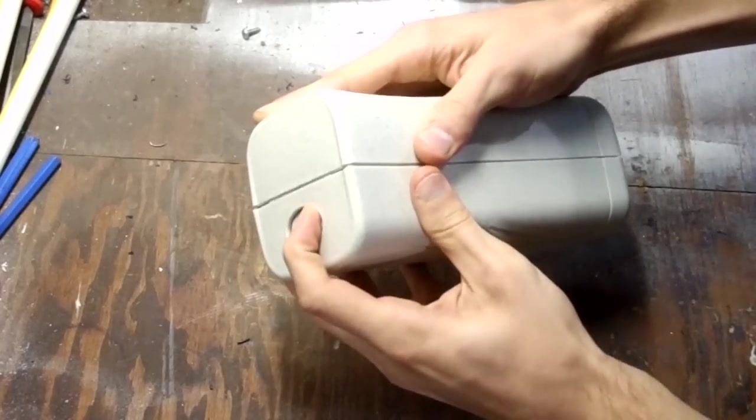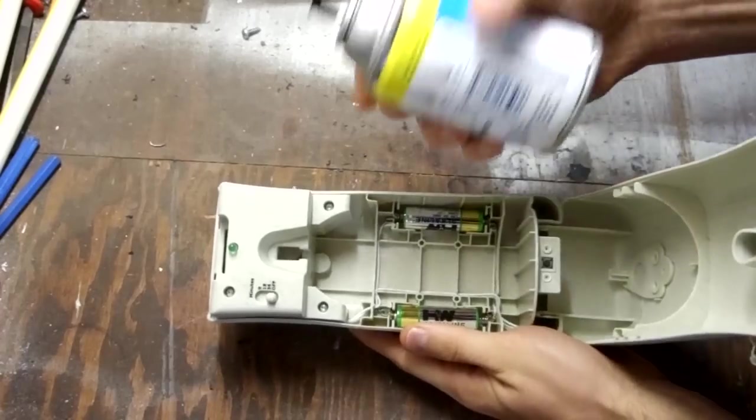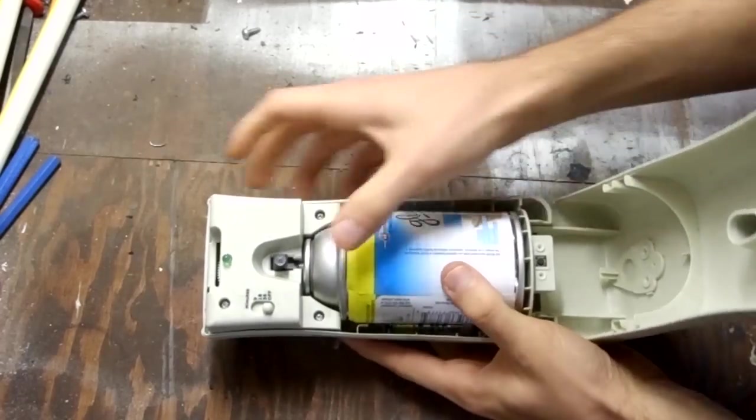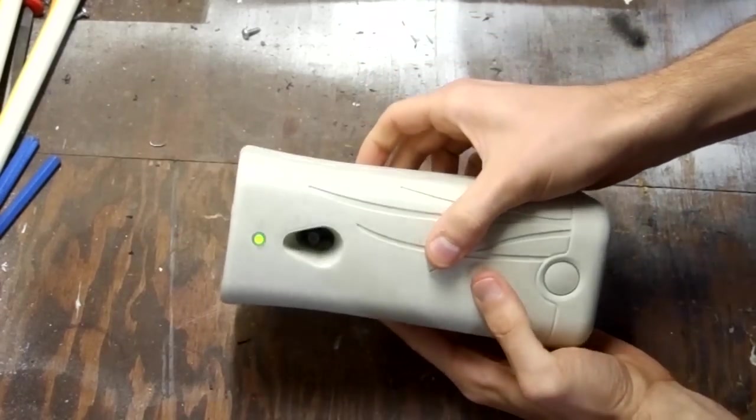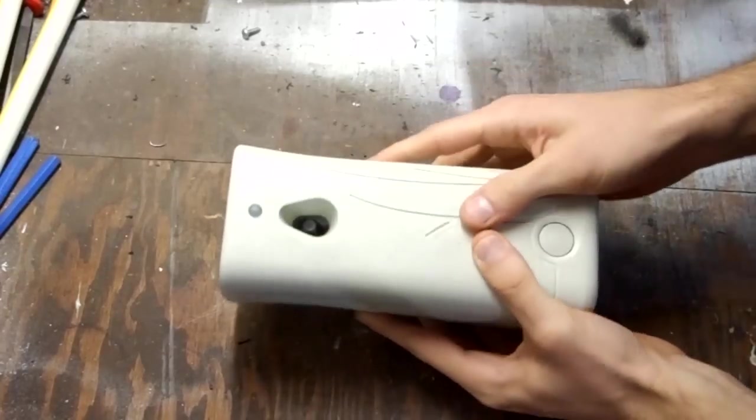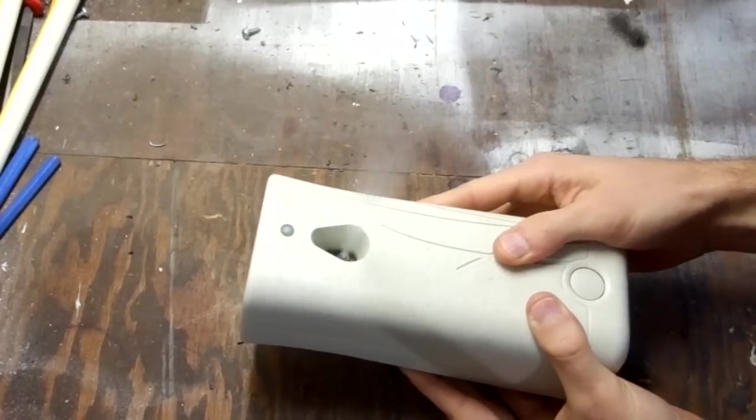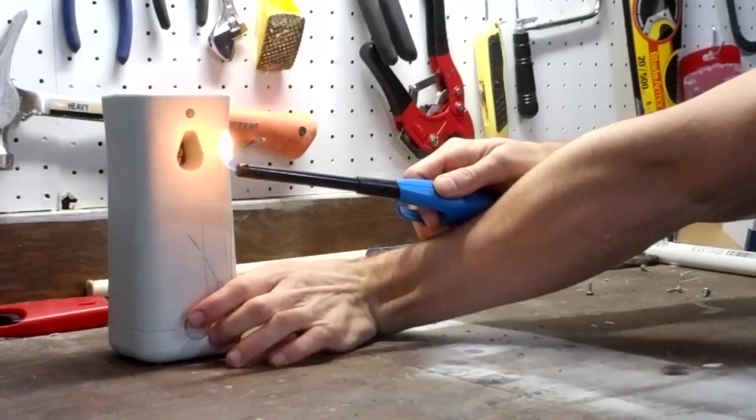To see how this thing works, first open it up, then put in the refill can. Turn on the power switch. Once the light flashes three times, it'll spray. After that, it'll go based on the timer setting. Let's see if we can use this to make our jack-o'-lantern breathe fire.